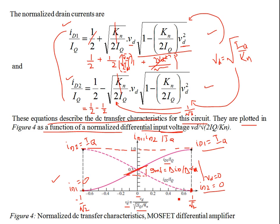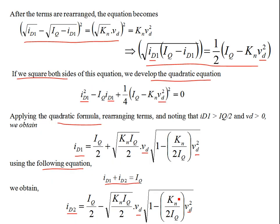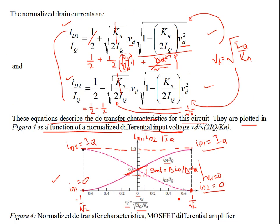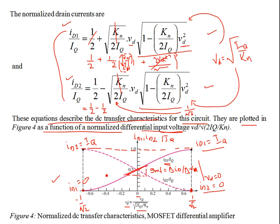From the DC transfer characteristics: if the differential voltage is positive (VD > 0), then VGS1 > VGS2 and ID1 > ID2. If VD is negative, then ID2 > ID1. When VD = 0, both currents are equal. Taking the gradient at VD = 0 gives the forward transconductance gain in amps per volt. The maximum differential voltage at which switching completes is ±1/√2 in normalized terms, or ±0.707.